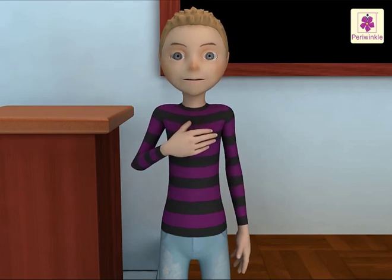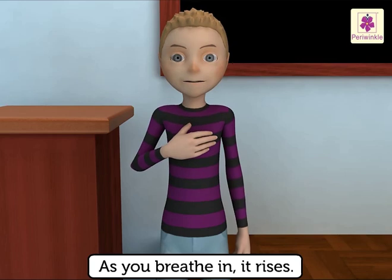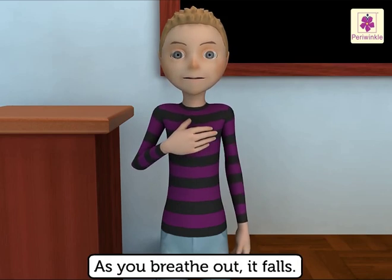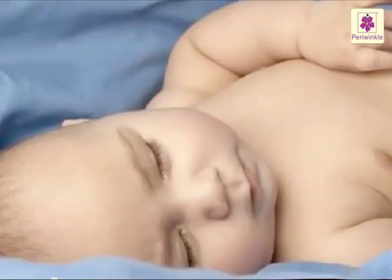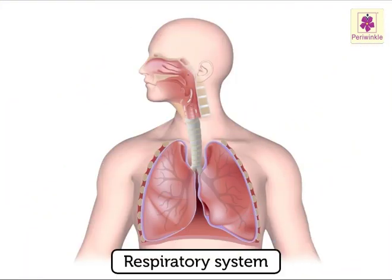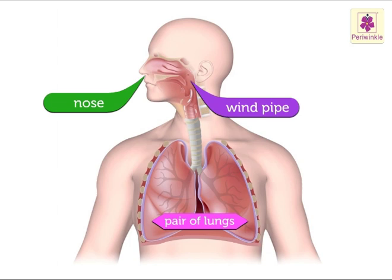Let us do an activity. Place your hand on your chest. Feel it rise and fall as you breathe. As you breathe in, it rises; as you breathe out, it falls. Watch a sleeping baby — see how its chest rises and falls as it breathes. The respiratory system consists of the nose, windpipe, and a pair of lungs.